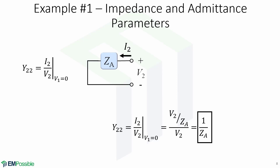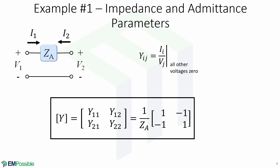Now we will find the last element, Y22. Y22 equals I2 over V2 when V1 equals 0, which leads us to the circuit we saw before, but now we have I2. I2 in terms of V2 and ZA equals V2 over ZA. Simplifying this expression gives us Y22 equal to 1 over ZA. Putting all the elements together, we obtain our Y matrix.